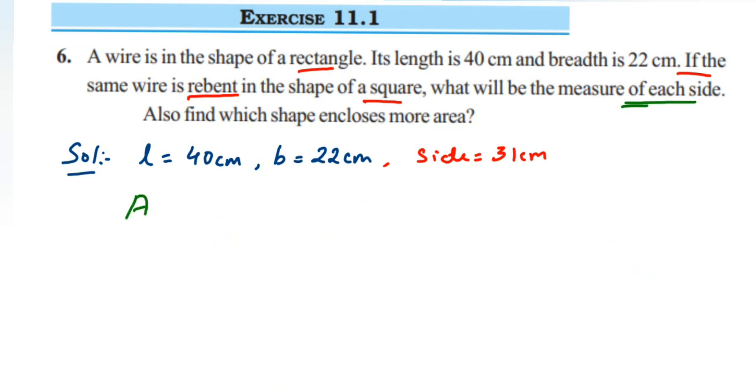Area of rectangle is equal to length × breadth. Length is 40 centimeters multiplied by breadth is 22 centimeters.